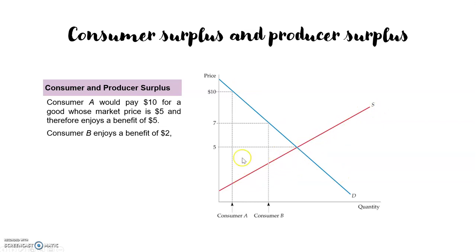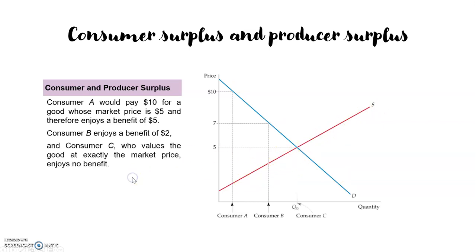Let's begin by imagining a situation where we have this demand and this supply in the market. The price in the market will be given by the point where both the demand and the supply cross, so the quantity exchanged in this market will be Q0 and the price will be 5.